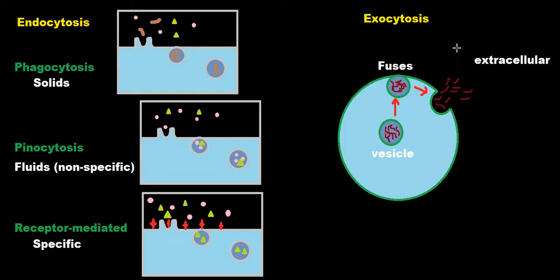What is a way to get things in and out of a cell? One way is by endocytosis and the other is by exocytosis. Let's talk about exocytosis first. Inside the cell, a vesicle forms with some material inside. That vesicle will fuse with the plasma membrane of the cell, and after fusing, it releases all of its inner contents to the extracellular area. That's one way of getting things out of a cell — exocytosis.